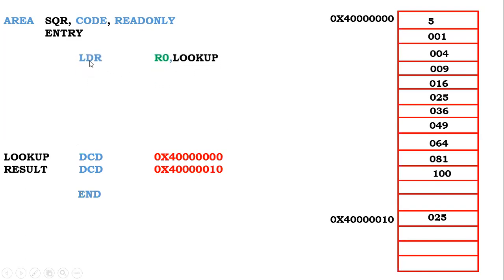The first instruction is LDR — load register. LDR stands for load register. It loads from the memory location named 'lookup', which is the name of the memory location that contains the base address of the table. This base address of the lookup table is loaded into register R0.